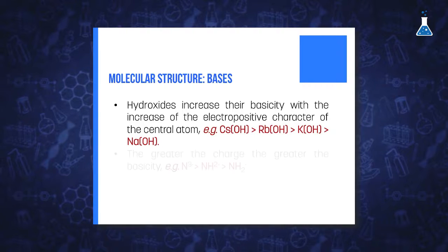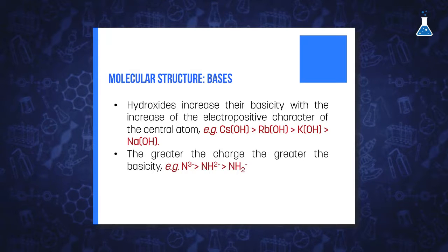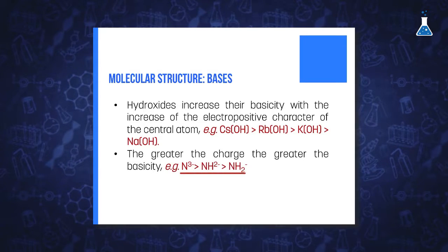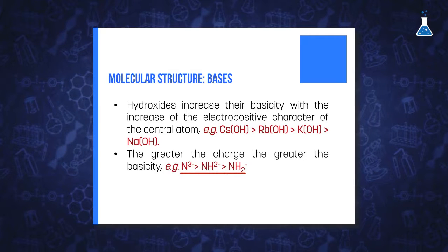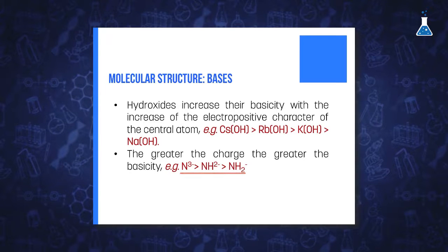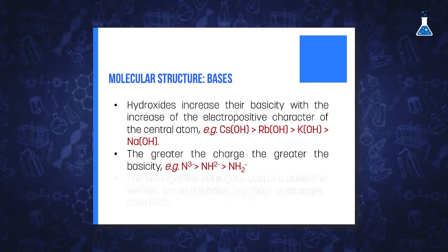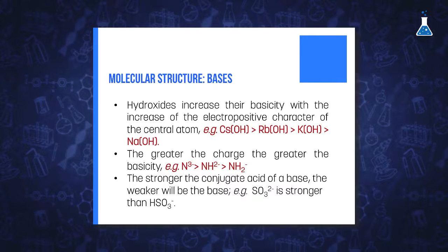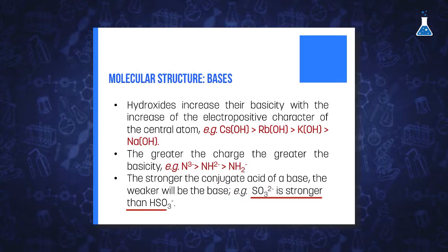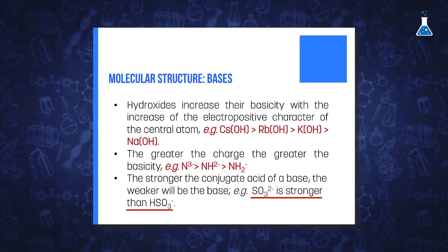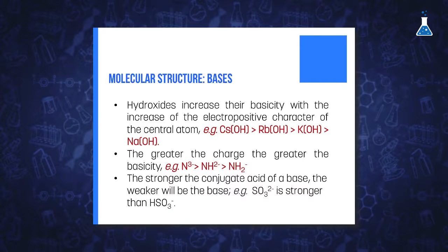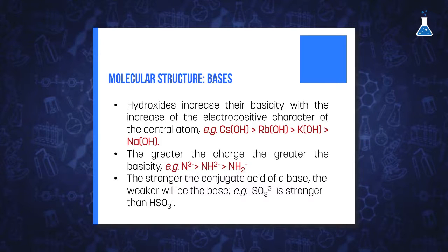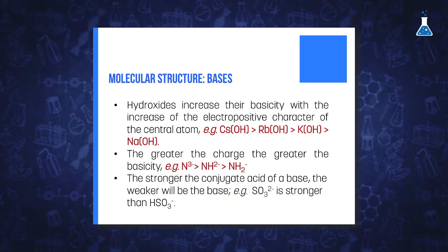The strength of a base can also be considered in terms of charge, so the greater the charge, the greater the basicity. For example, nitride anion will be more basic than the amide anion, and this one more basic than the amide anion. Another argument to estimate the strength of a base is to examine the strength of the conjugate acid: the stronger the acid, the weaker the conjugate base. Therefore, sulfide is a stronger base than hydrogen sulfide, due to the fact that sulfurous acid, the conjugate acid of hydrogen sulfide, is stronger than hydrogen sulfide, the conjugate acid of sulfide.